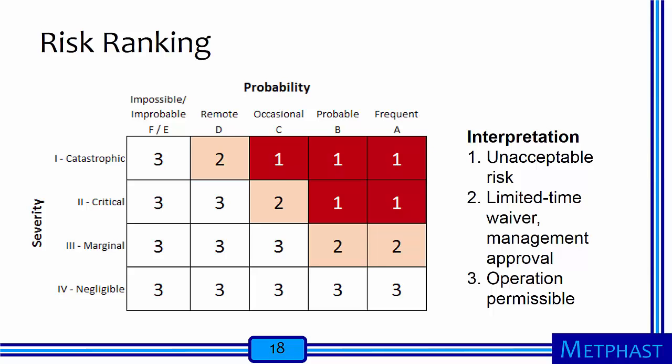Risk is assigned a ranking based on a combination of severity and probability, with severity from catastrophic to negligible on the y-axis and probability from impossible to frequent on the x-axis. Under this system, processes with a risk rank of 3 are permissible, those with a risk rank of 2 are acceptable for a limited time with management approval, and those with a risk rank of 1 are unacceptable and require controls. Hazards with catastrophic severity are only permissible if the probability is impossible or improbable, while those with negligible severity are permissible regardless of probability.